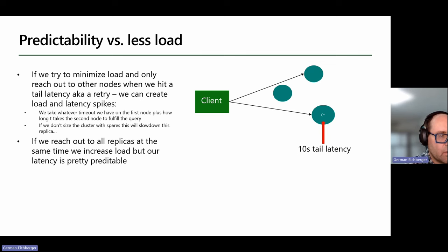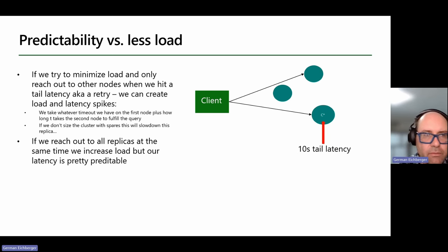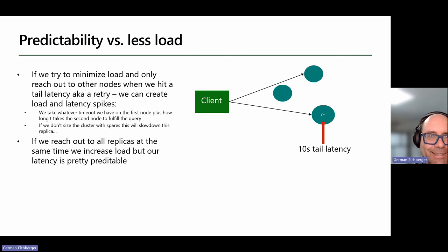If you reach out to all replicas at the same time, you increase the load but your latency becomes predictable — and that's what we want. Some people would rather spend more money to get latency down than to have a more predictable load — it's a trade-off either way.